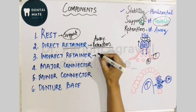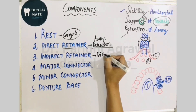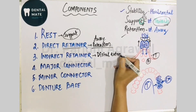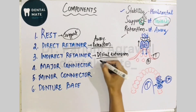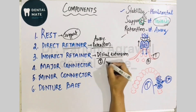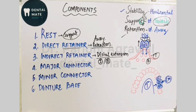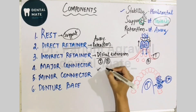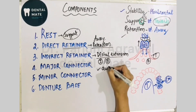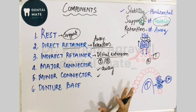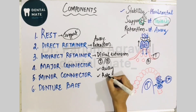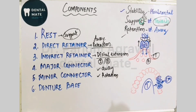The indirect retainer is always used in distal extension cases — that is, Kennedy's Classification Class I and Class II. It prevents or resists the movement or rotation of the prosthesis away from the residual ridge. So the indirect retainer prevents the prosthesis from moving away from the tissue and also prevents rotation.